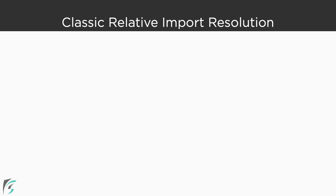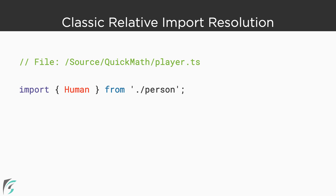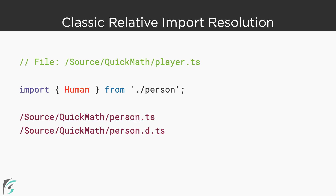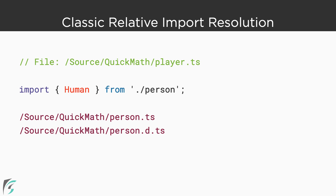Resolving relative imports in classic mode is pretty straightforward. Suppose we have a file named player.ts located in the source/quickmath directory, and we have imported the person module using dot-slash to indicate it is in the current directory. TypeScript will look for the person module in a person.ts file in the same directory. If the file is not found, it will look for a person.d.ts file in the same directory. The .d.ts extension is used with type declaration files, which provide type information for JavaScript libraries used in TypeScript projects. This is how TypeScript resolves relative imports in classic mode — looking for a file with one of these two extensions in the specified directory.